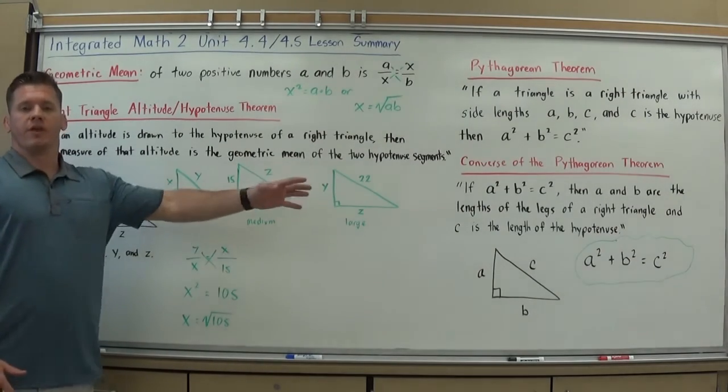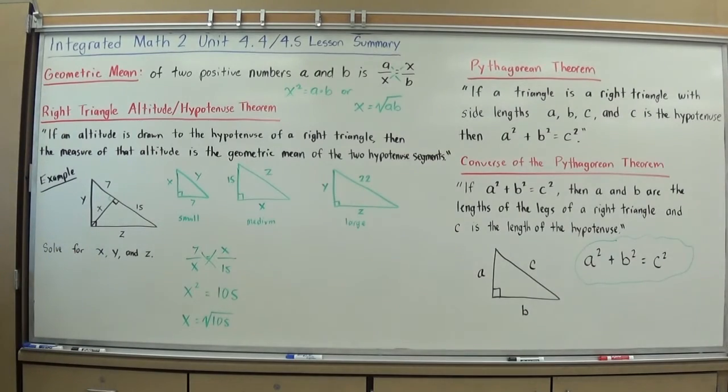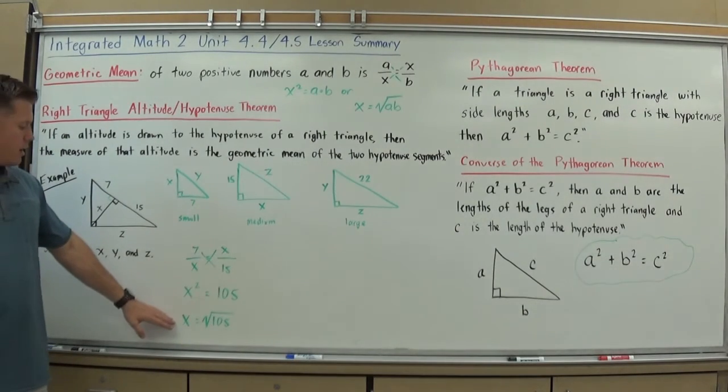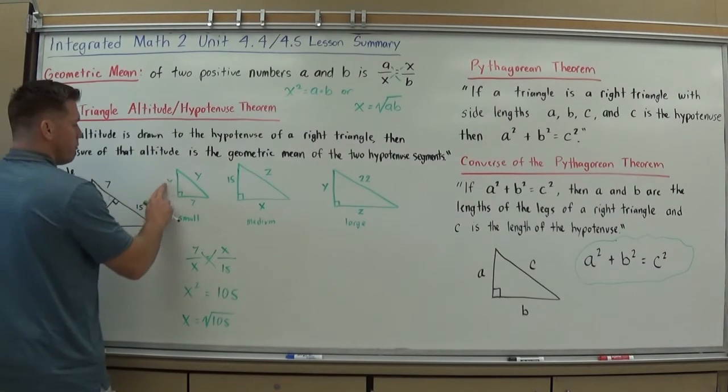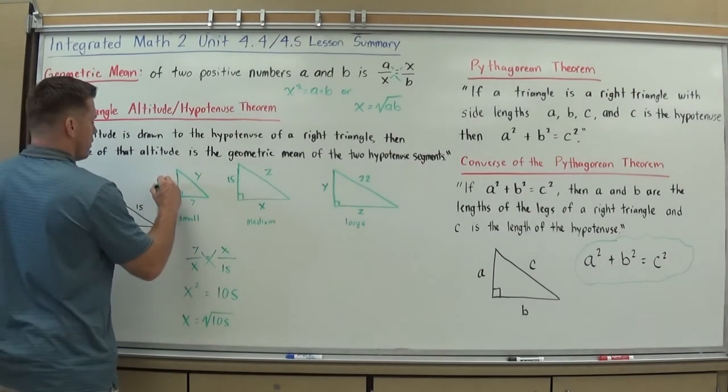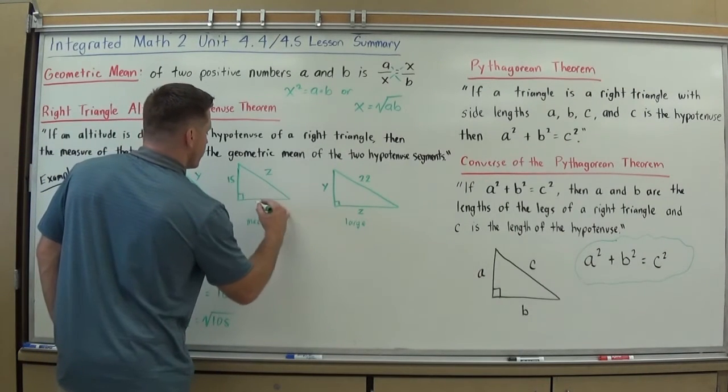And then once you've solved everything, you can use your calculator and kind of change that square root to a decimal if you like. But for now, let's leave that. So it's the square root of 105. I can actually go back now in all my little diagrams and change it to that. Now that I know it's root 105.